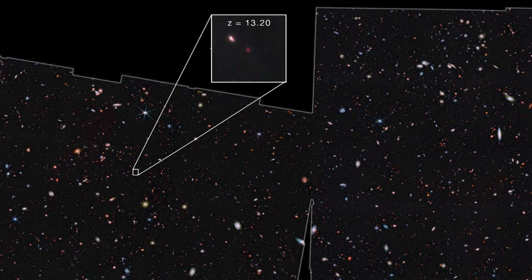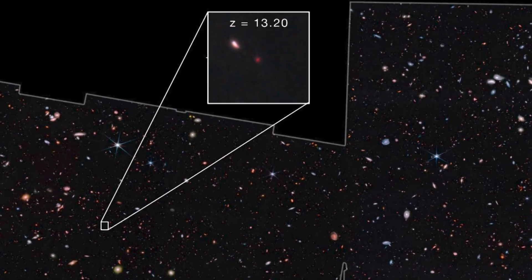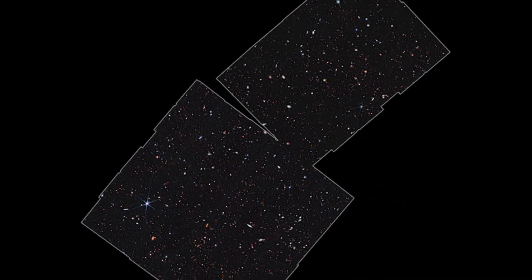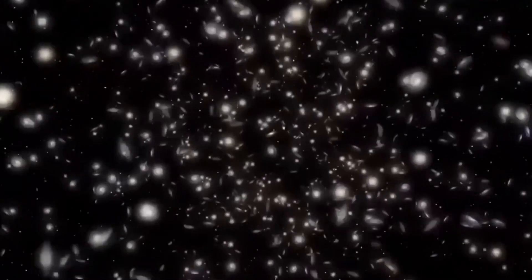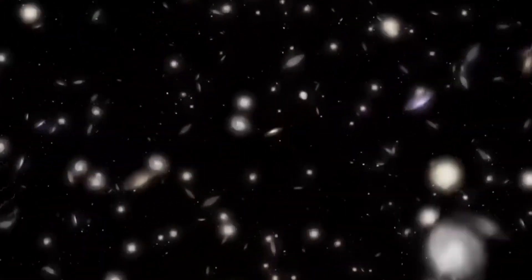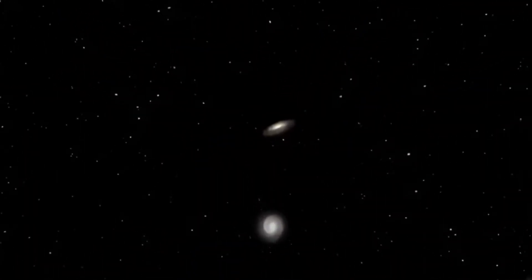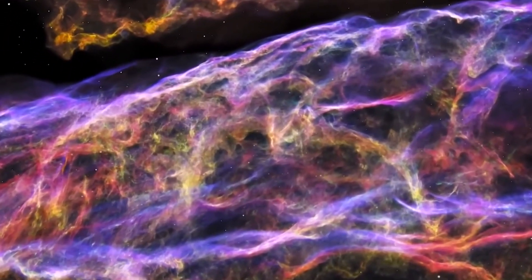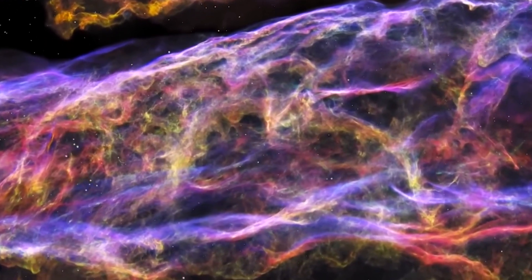The oldest galaxy of all, named JADES GS-13-0, existed approximately 13.5 billion years ago. So far, some characteristics of the earliest galaxies have been identified, which were relatively small clusters with a star formation rate of one to two solar masses per year. However, it is important to note that we are just beginning to unlock the secrets of this early universe.